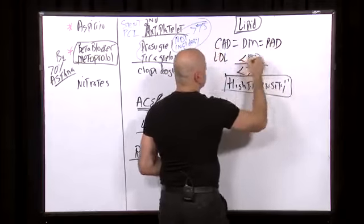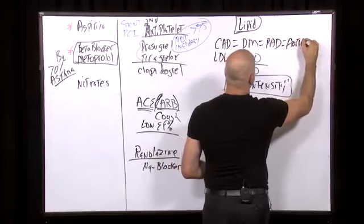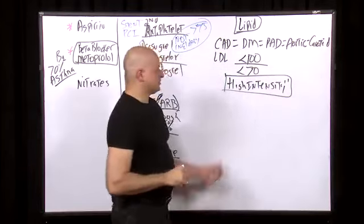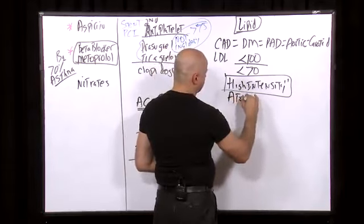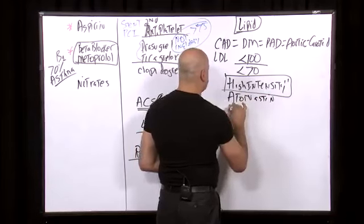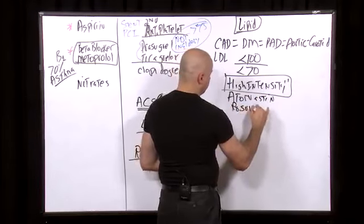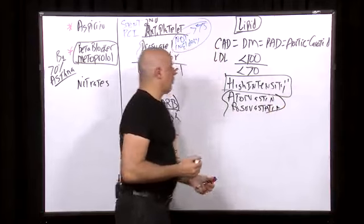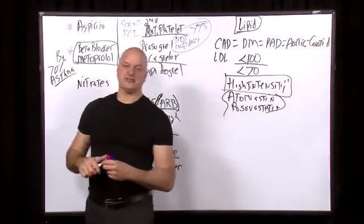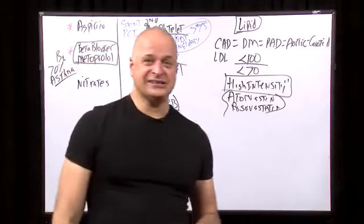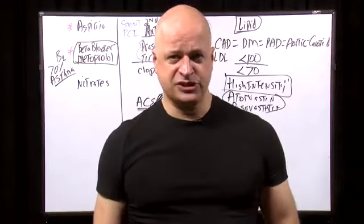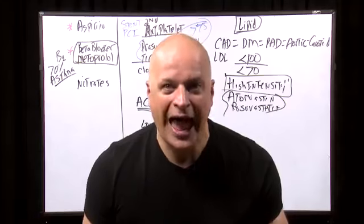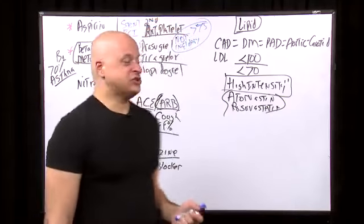You should be at least an LDL under 100 if you have diabetes and coronary disease under 70. Peripheral arterial disease is equivalent to coronary disease. Aortic disease, not aortic valve, and carotid disease should be at least under 100 for all of these. And high-intensity statin means atorvastatin or rosuvastatin at high dose. Or anybody who has a greater than 7.5% chance of coronary disease. Since we're in the coronary disease section, talking about a 7.5% chance is not too relevant because you have coronary disease. So we should be bringing it down at least to this.